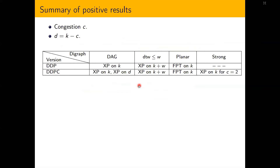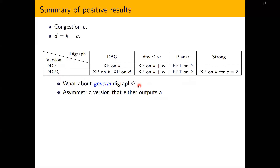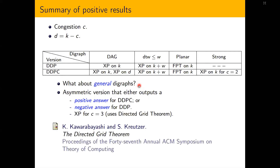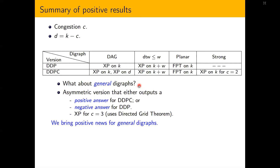This is a summary of positive results, where c is the congestion and d is the distance between the number of requests and the allowed congestion. All of those positive results consider a restriction on the input digraph. We can ask: what about positive results for general digraphs? There is one for an asymmetric version introduced by Kawarabayashi and Kreutzer, which was shown solvable in polynomial time when the congestion equals 3, using the directed grid theorem. In our work, we also bring positive news for general digraphs.